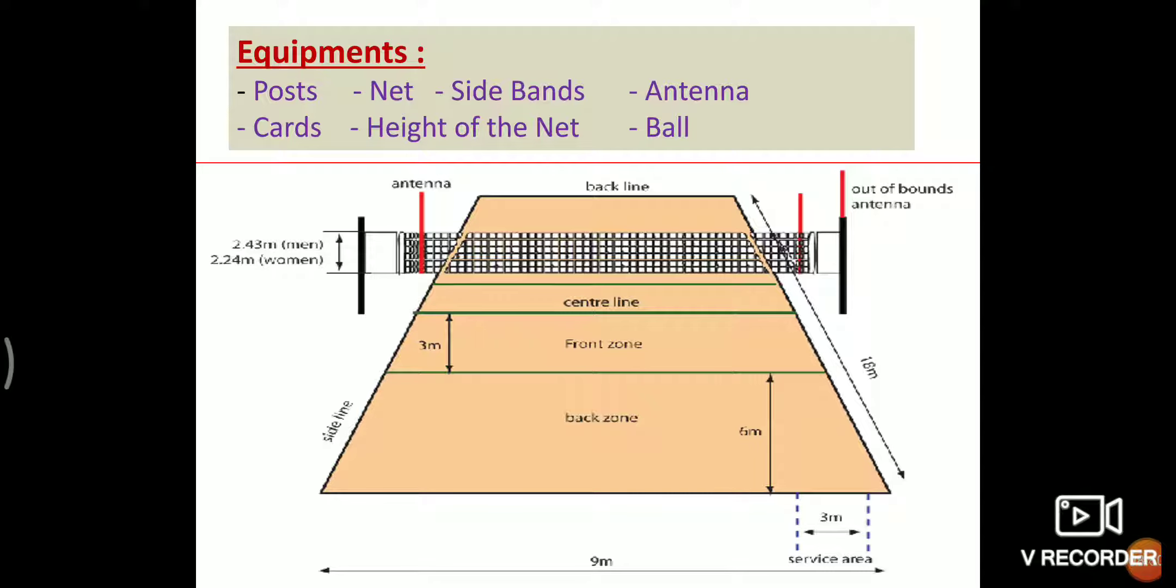Yellow card and red card are used for foul indication. Height of the net: Height of the net for men is 2.43 meters and for women it is 2.24 meters. Ball: The ball shall be spherical, made of flexible leather or synthetic case with bladder inside made of rubber or similar material. Number 4 ball is used in volleyball game. Its weight is 260 to 280 grams and its circumference is 65 to 67 centimeters.